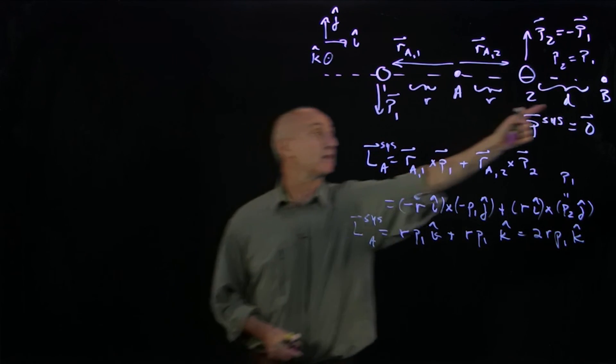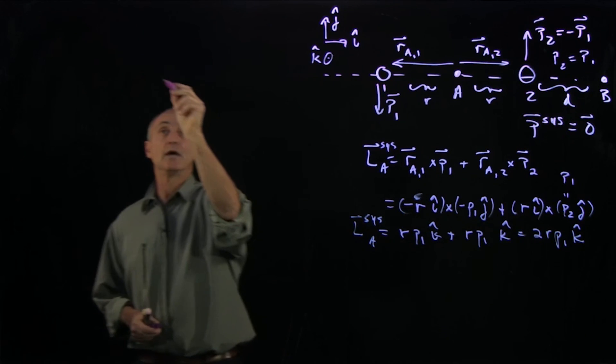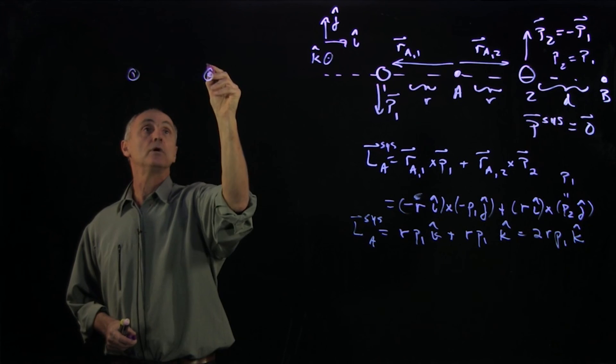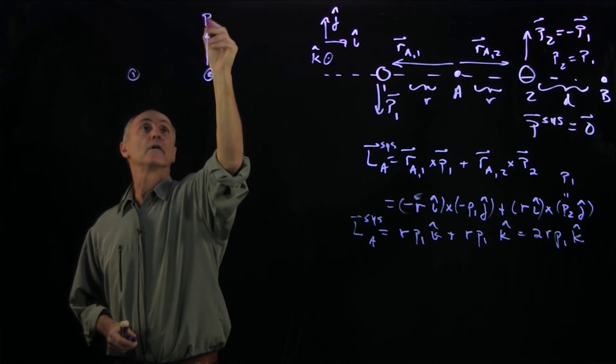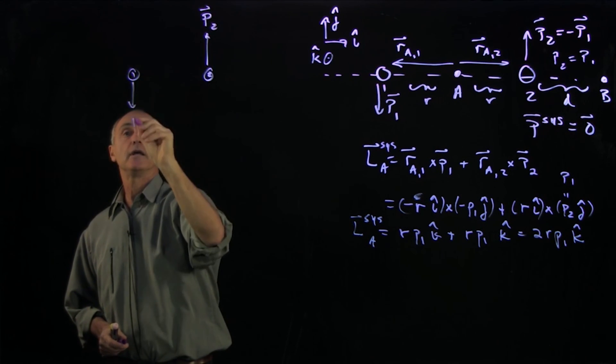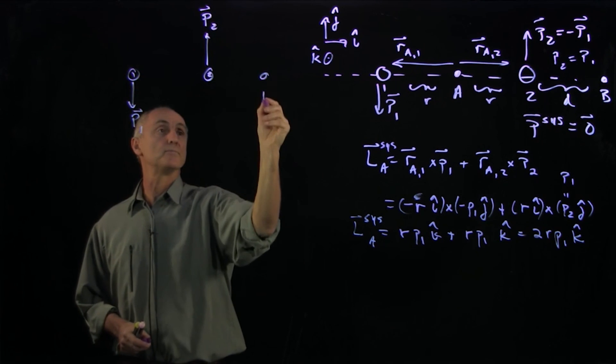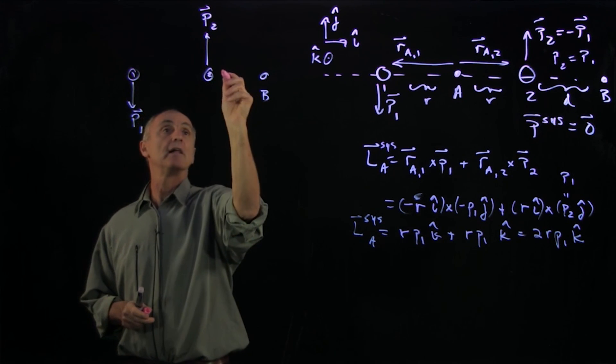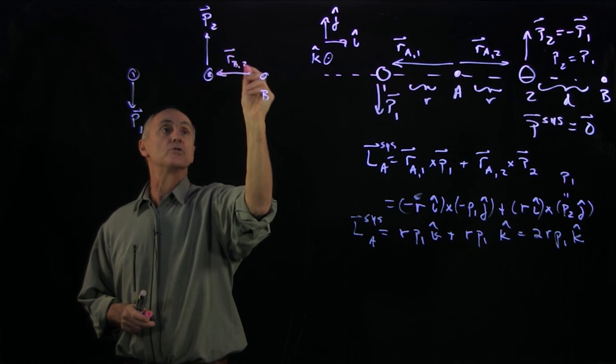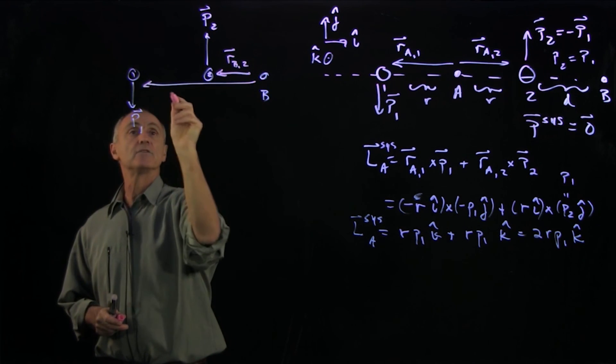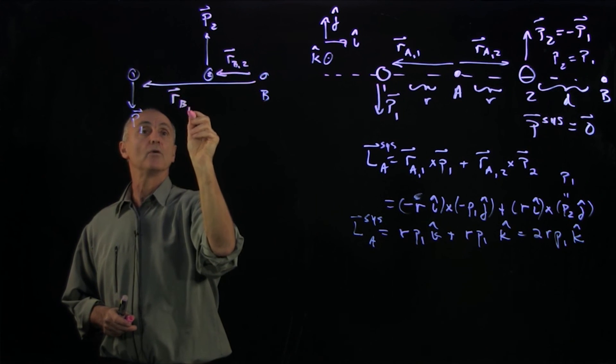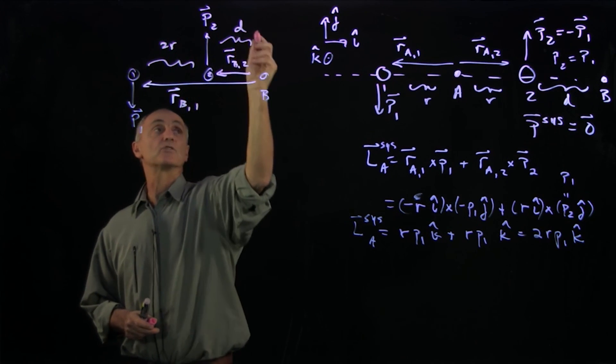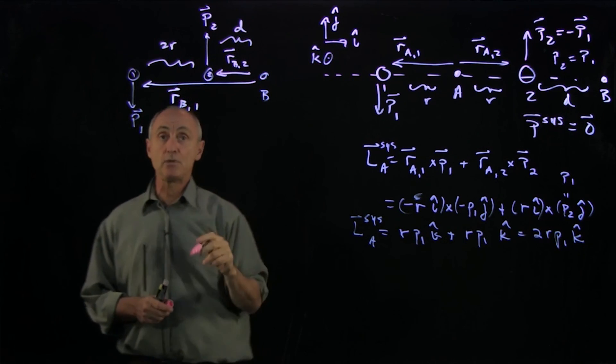Now I'd like to calculate the angular momentum about B. So let's draw the same diagram: 1, 2. Here's P2, here's P1, here's B. And now I'll draw my vectors. This is R_B2, and this is R_B1. This distance was 2R, this distance was d. I'm going to use the same unit vectors.